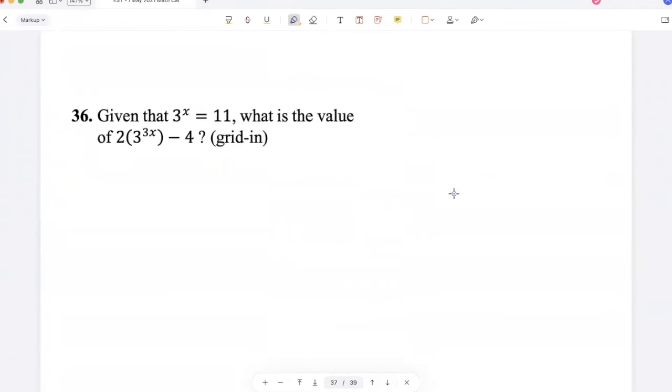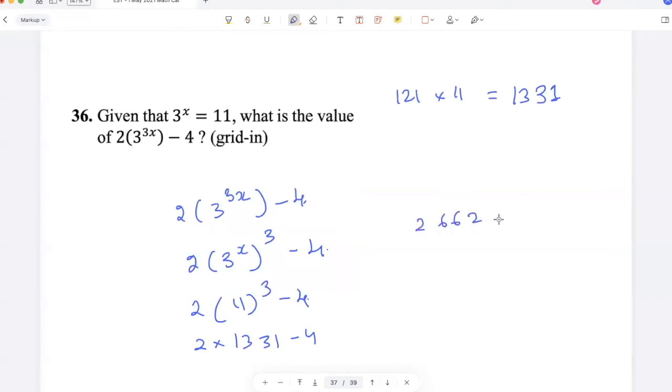Given that 3 to the power x is 11, what is the value of 2 times 3 to the power 3x minus 4? I can write this as 2 times 3 to the power x whole cube minus 4. So 2 times 11 cube minus 4, and 11 cube is 121 into 11, which is 1331. So 2 times 1331 minus 4, that's 2662 minus 4, so 2658.